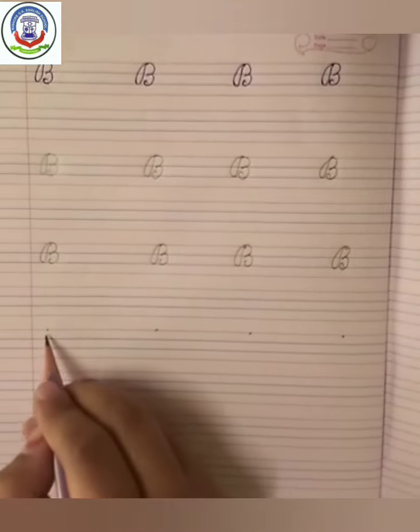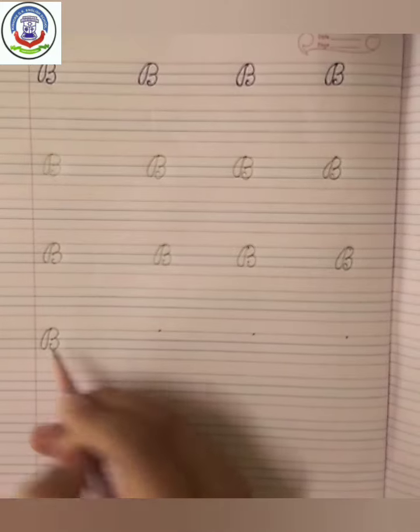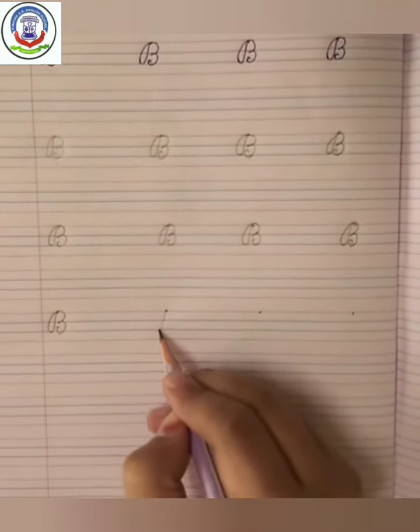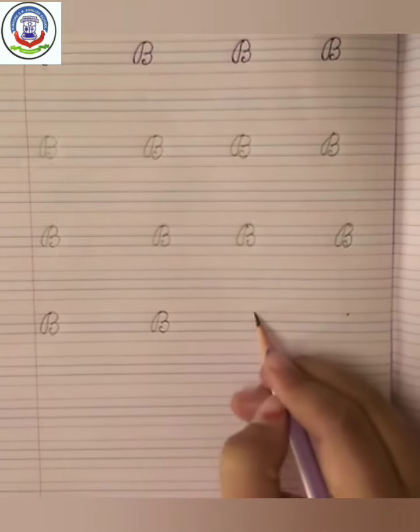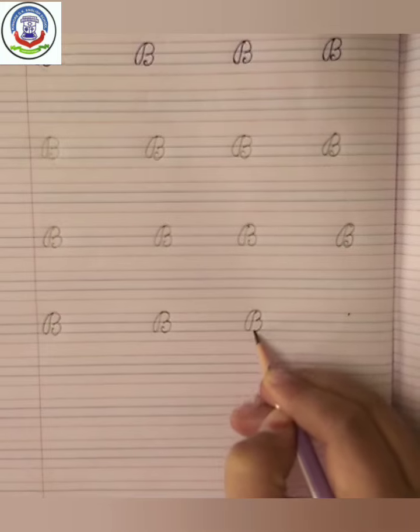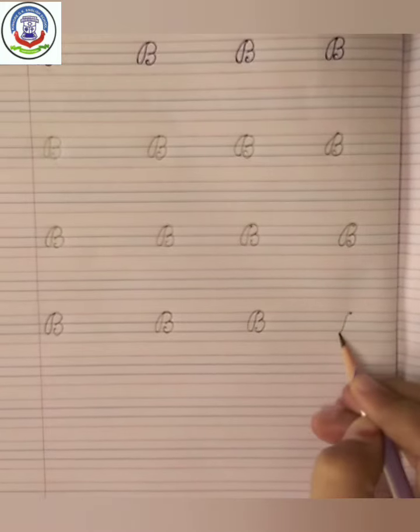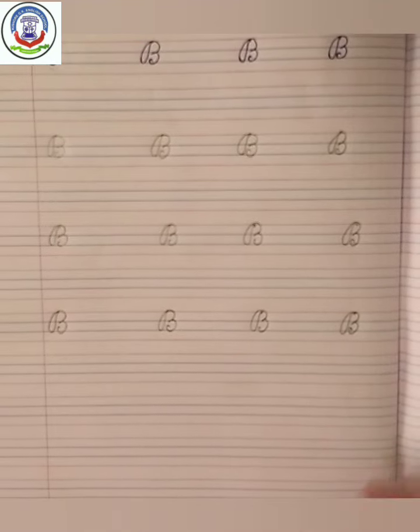Again, B says burr burr burr bone. B says B, B, B, Bat. B says B, B, B, Bee. B says B, B, B, Butterfly.